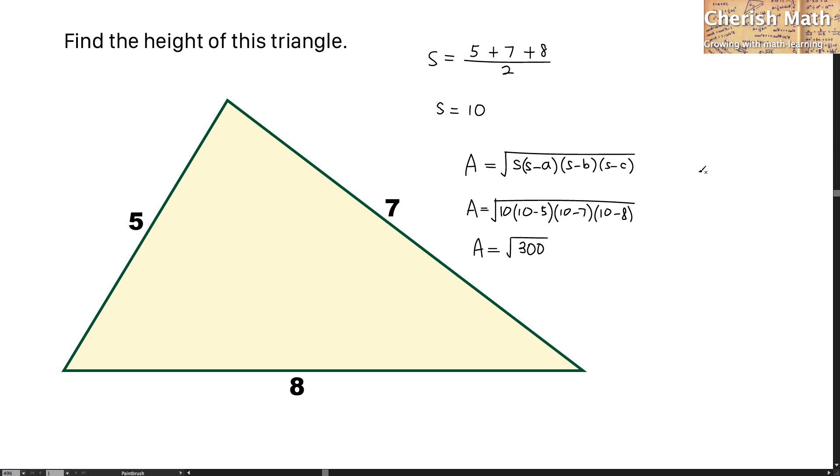And now, by using the formula of a triangle with area as 1 half multiplied by the base and the height of the triangle. Since I got the area here as 300 and square root of this that is equal to 1 half, the base that from the triangle here is 8 units multiplied by the height.